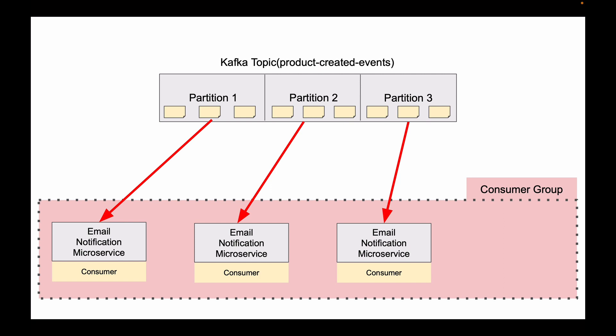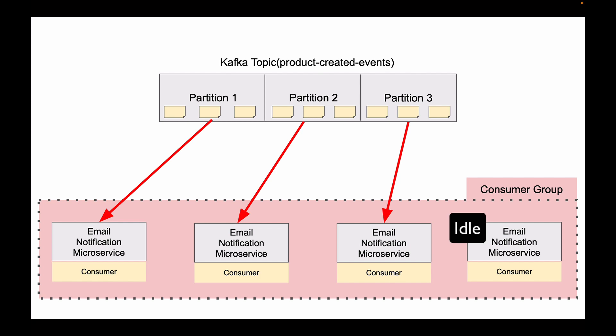Now let's assume we want to scale up our application even further and start one more instance of Email Notification microservice. Unfortunately, this instance will sit idle. In Kafka, two consumers from the same consumer group cannot read messages from the same partition. You cannot start more consumers than the number of partitions you have in a topic. If your topic has one partition, you can start only one consumer microservice. If your topic has three partitions, you can scale your application by starting three instances only. Any extra instances will sit idle.